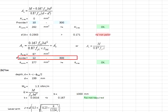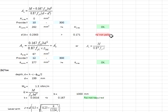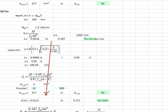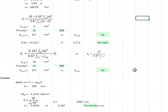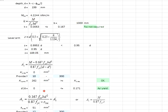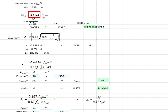Provide reinforcement bar T12 at 300 mm spacing; you will get an area greater than the required area. For the toe, the same set of calculations is used with a different moment value. For the heel, the same calculation steps apply, and the moment used for the heel is given here.